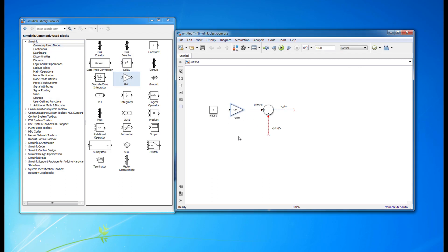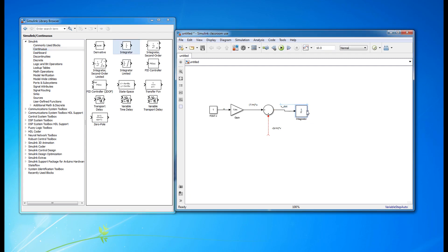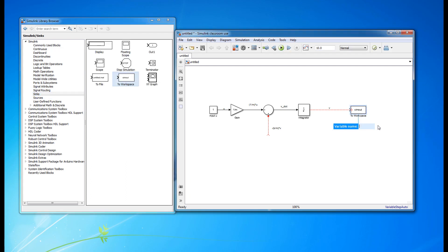Remember you'll need key blocks like the summing junction, the gain block, the integrator, an input from the sources submenu, and a to workspace block from the sinks menu.